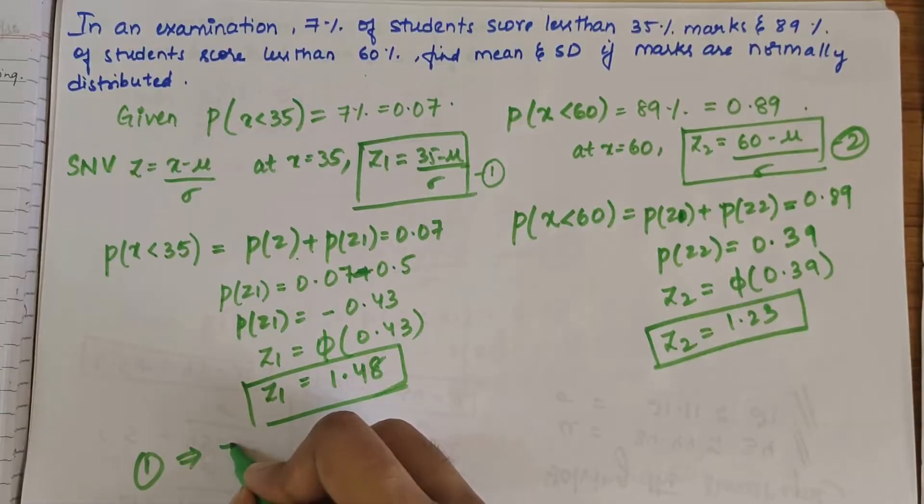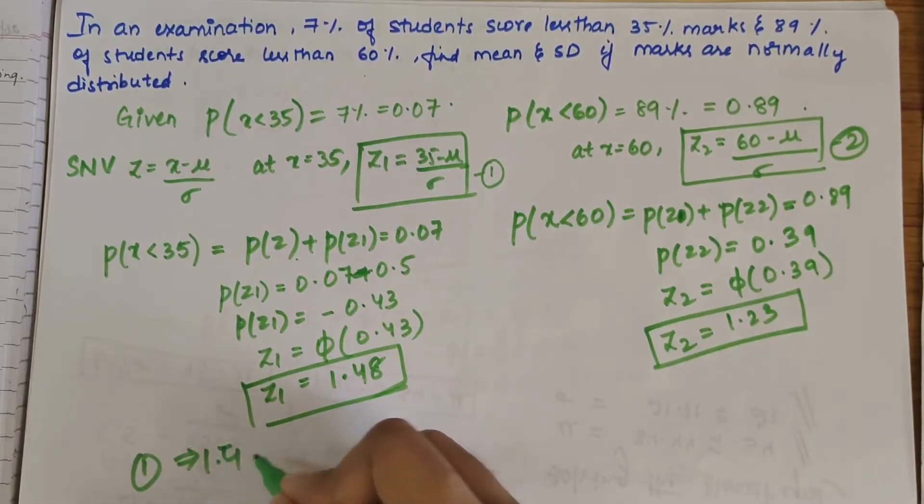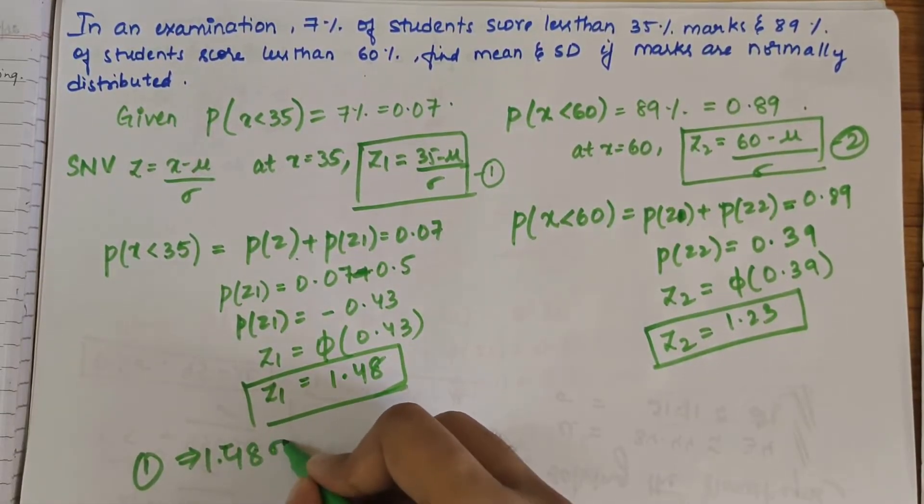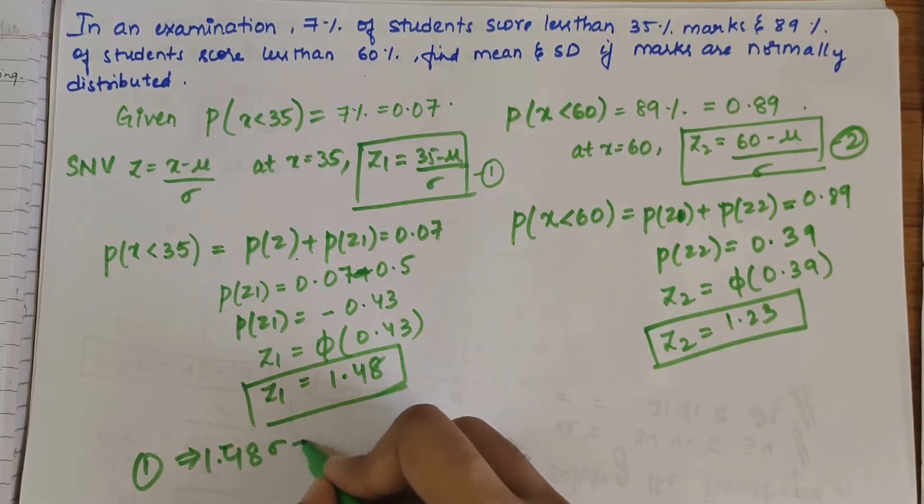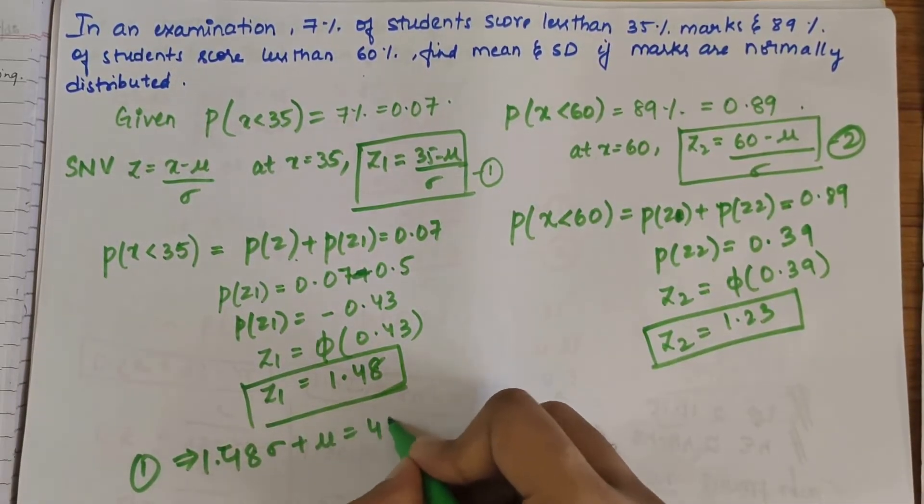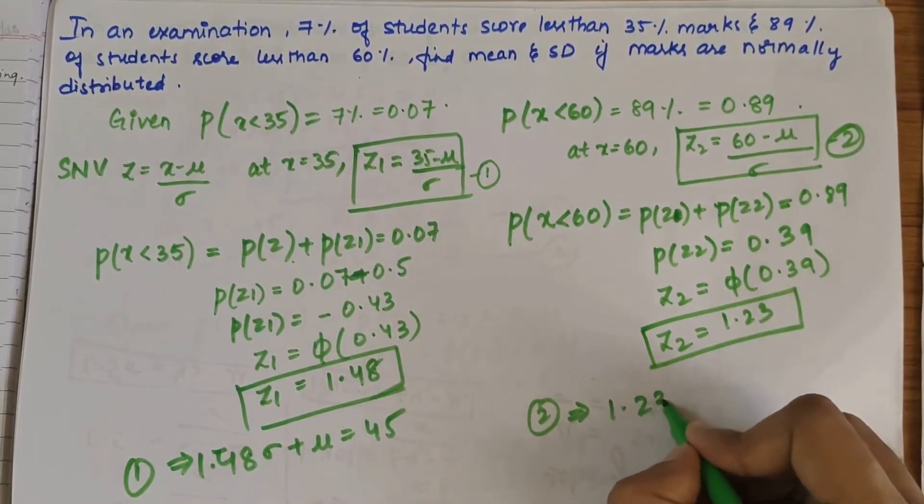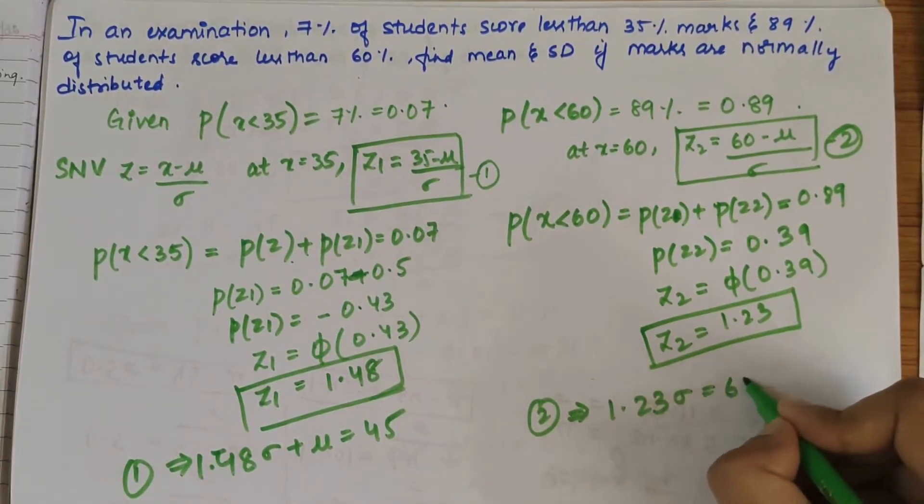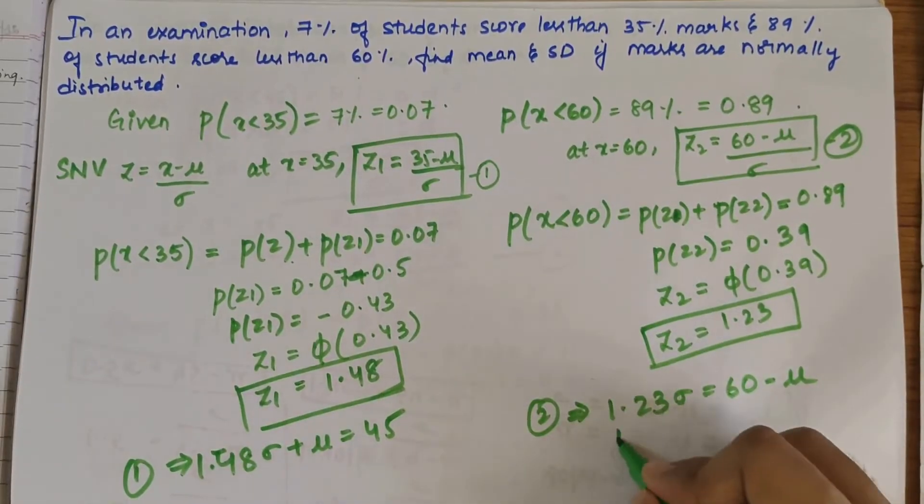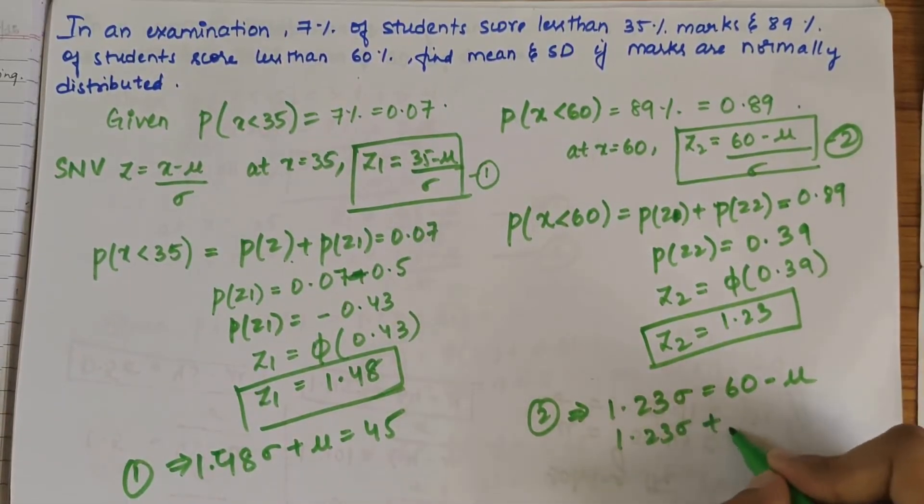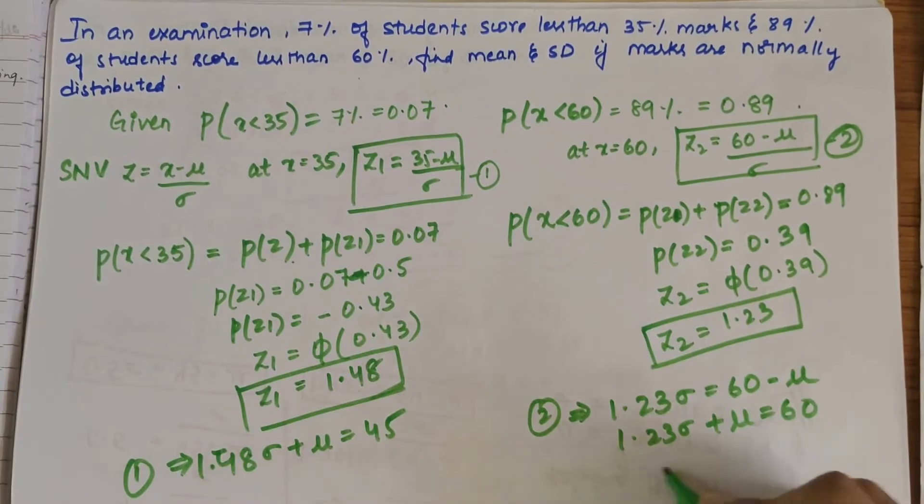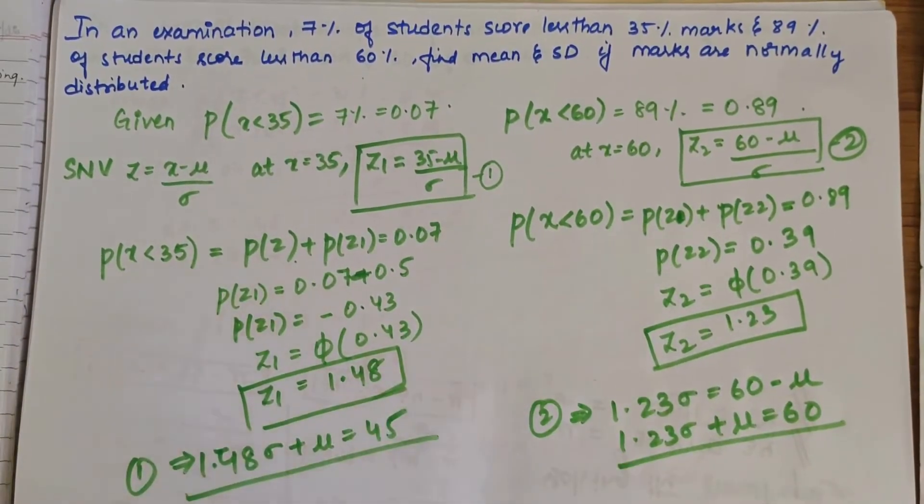So now that you have got Z1 and Z2 values, substitute them in these two equations. First equation would become 1.48 sigma plus mu is equal to 35, and second equation would become 1.23 sigma plus mu is equal to 60.